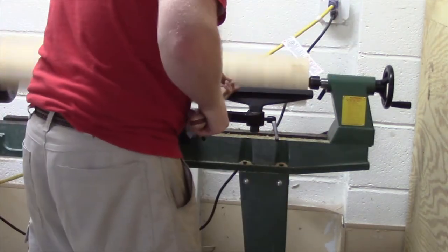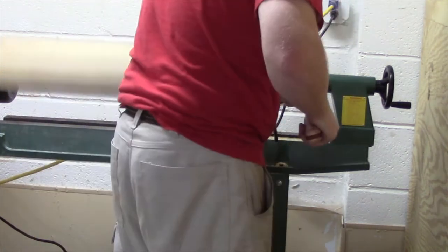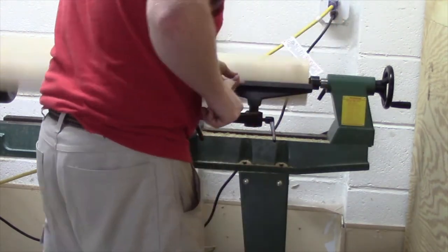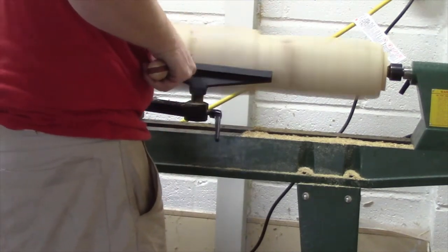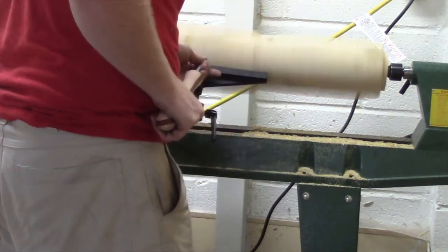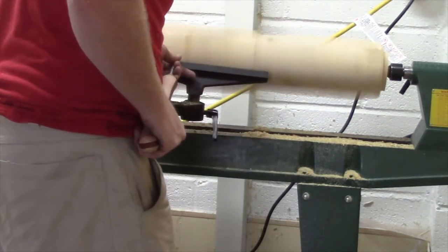I think my lathe is rated for 33 and three-eighths or something like that, but I was able to get 34 on there. I kept it on the slowest speed for probably 90 to 95 percent of the project because this thing just took forever to get round.